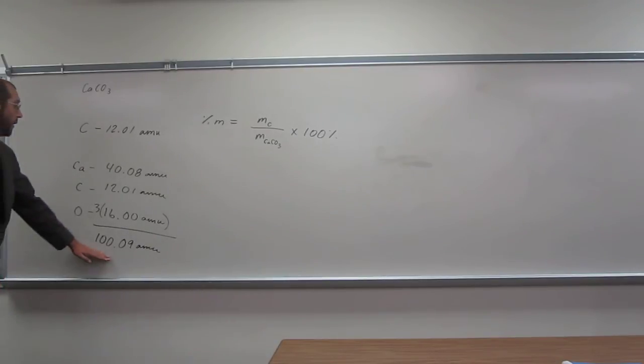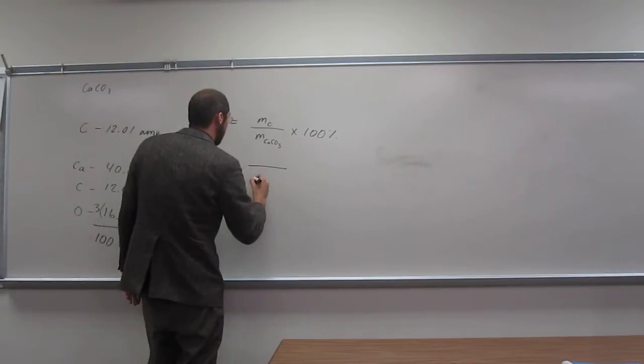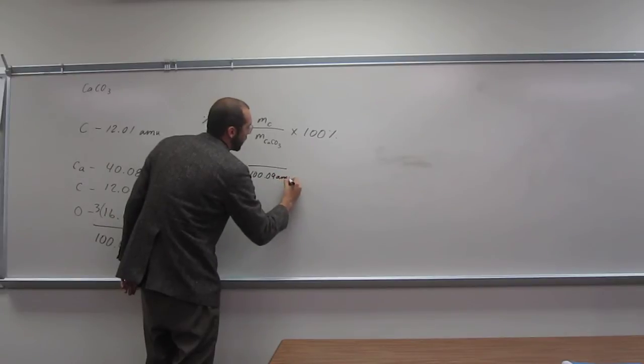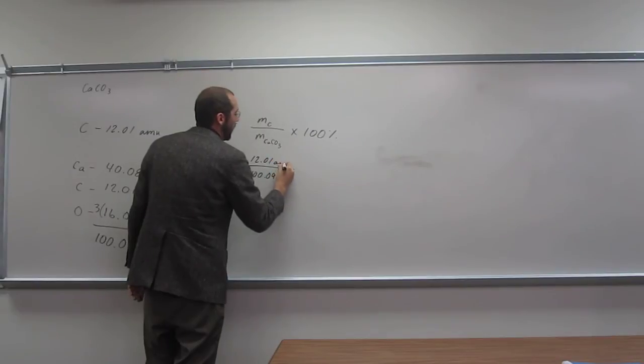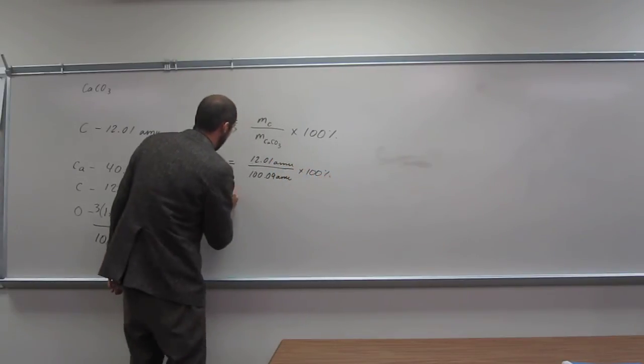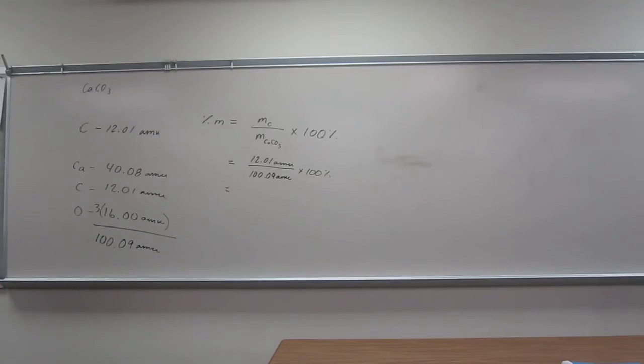Okay, so that's the total mass, or the mass of calcium carbonate, so 100.09 amu. And up here, 12.01 amu times 100%. And how many sig figs would our answer be to? In this case, four, right?